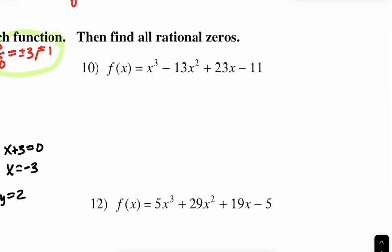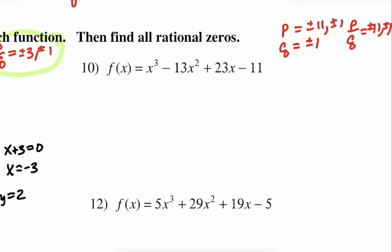Let's do number 10. The P's are with constant 11: just plus or minus 11 and 1. The Q's are plus or minus 1 on the x cubed coefficient. So our P over Q list is plus or minus 11 and plus or minus 1. There are at most three rational zeros for a cubic. Let's plug in positive 1 first — and we get 0.